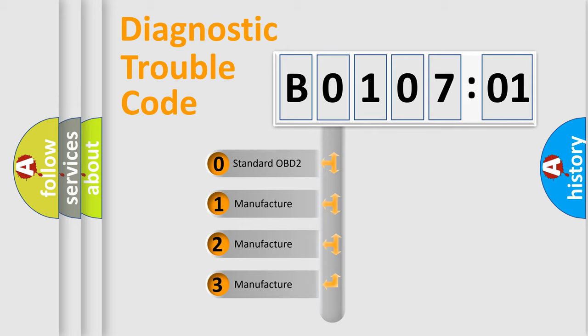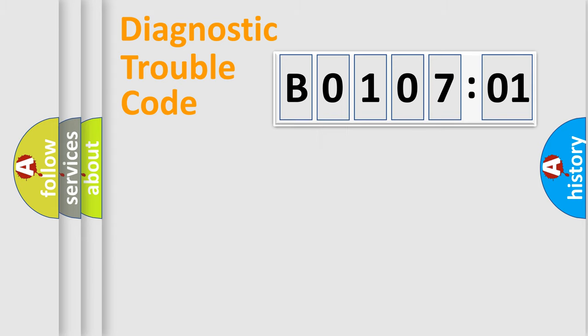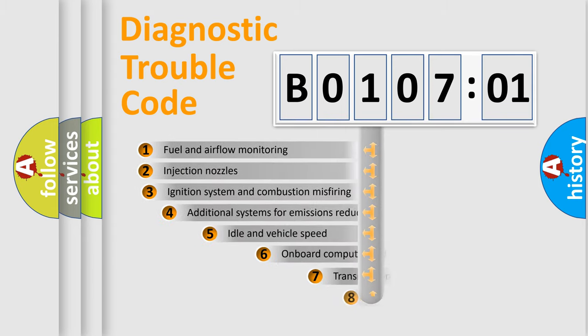If the second character is expressed as zero, it is a standardized error. In the case of numbers 1, 2, 3, it is a more prestigious expression of the car-specific error.